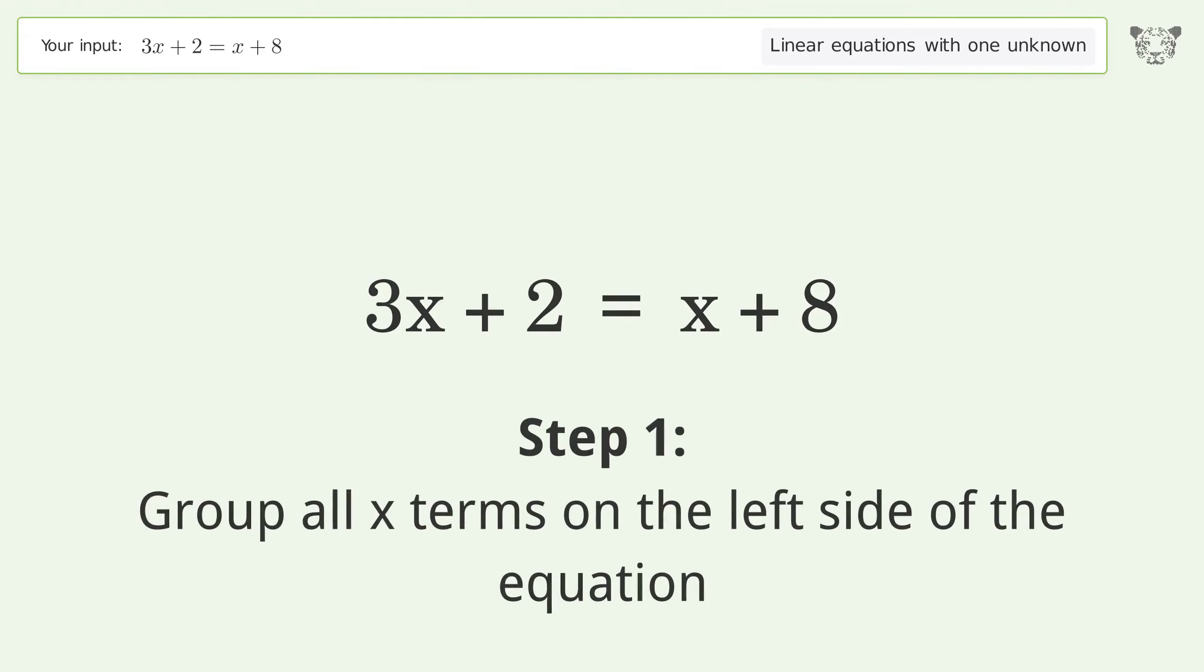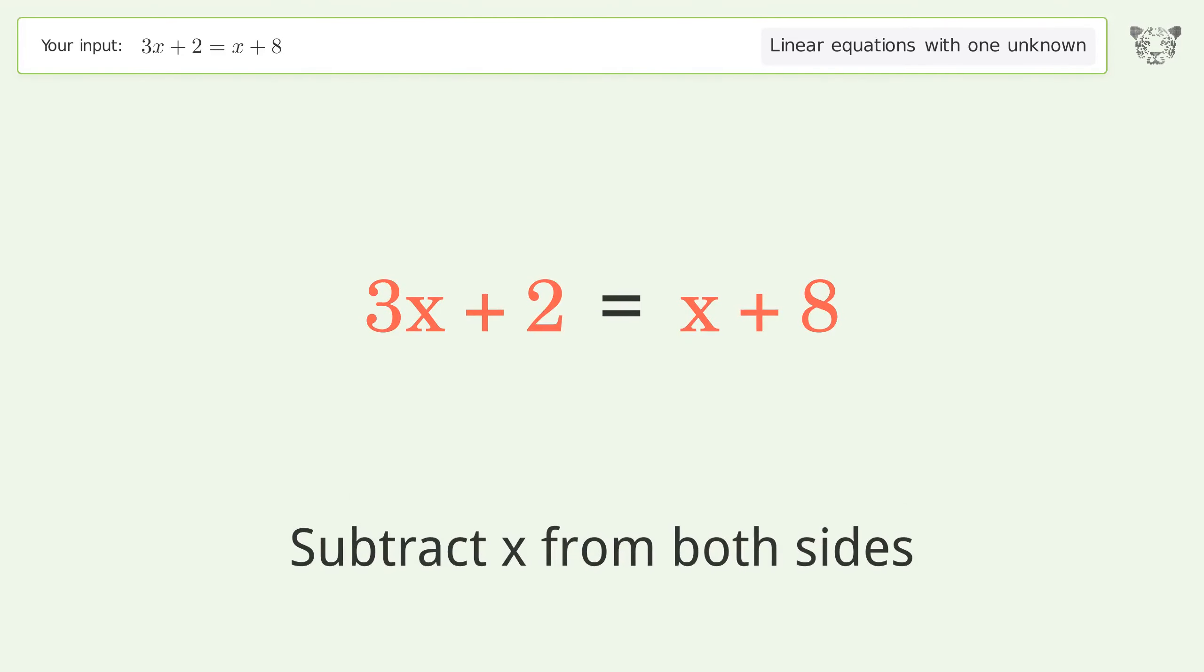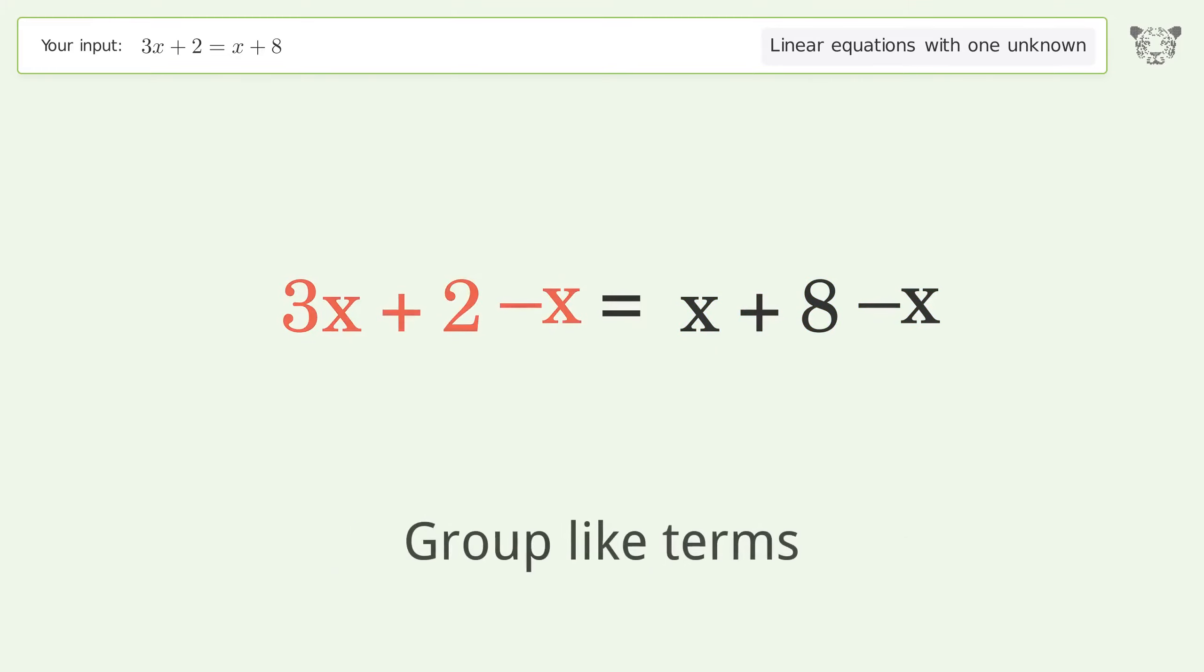Group all x terms on the left side of the equation. Subtract x from both sides. Group like terms. Simplify the arithmetic.